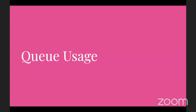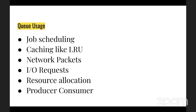Different use cases for queues include job scheduling — for example, using a DAG (Directed Acyclic Graph) where there are dependencies among different jobs, so one job must be done before another. You execute the first job, then put all dependent jobs in order and execute one after another. Queues are also used in caching systems like LRU, network packet handling on Ethernet, and IO request handling.